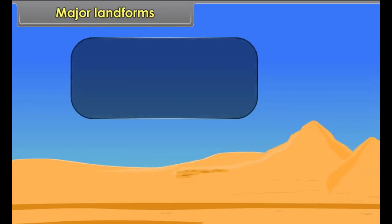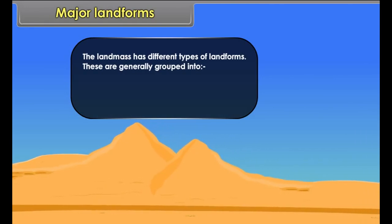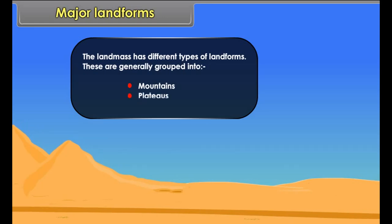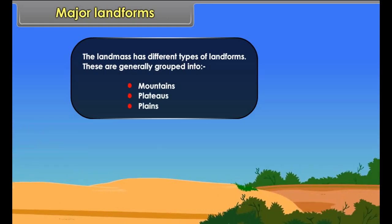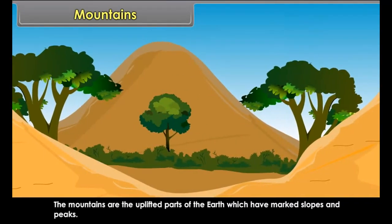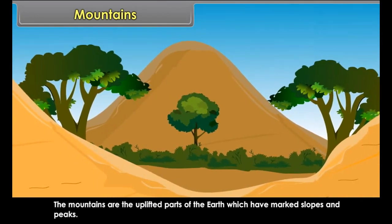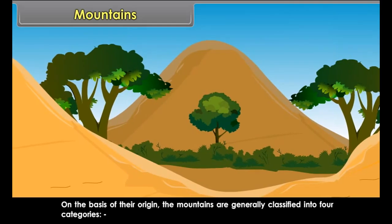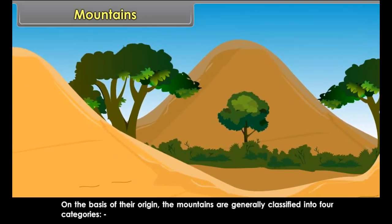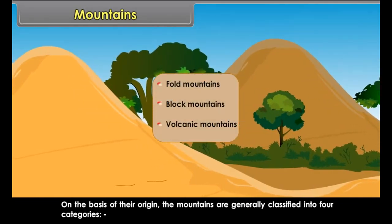The landmass has different types of landforms. These are generally grouped into mountains, plateaus, and plains. Mountains are the uplifted parts of the Earth which have marked slopes and peaks. On the basis of their origin, the mountains are generally classified into four categories: fold mountains, block mountains, and volcanic mountains.